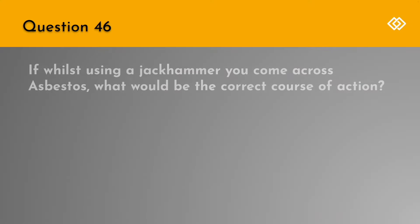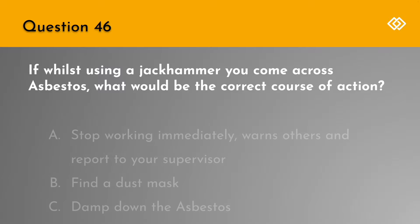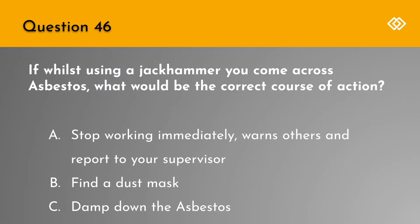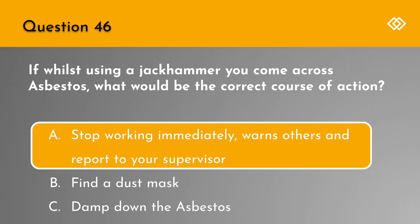Question 46. If whilst using a jackhammer you come across asbestos, what would be the correct course of action? A. Stop working immediately, warn others and report to your supervisor. B. Find a dust mask. Or C. Damp down the asbestos. The correct answer is A. Stop working immediately, warn others and report to your supervisor.